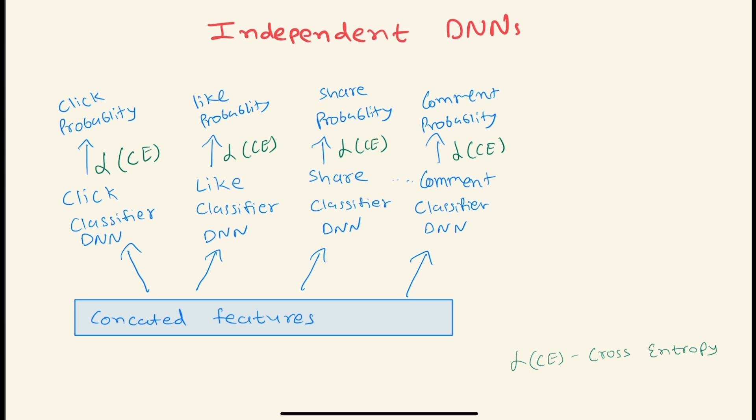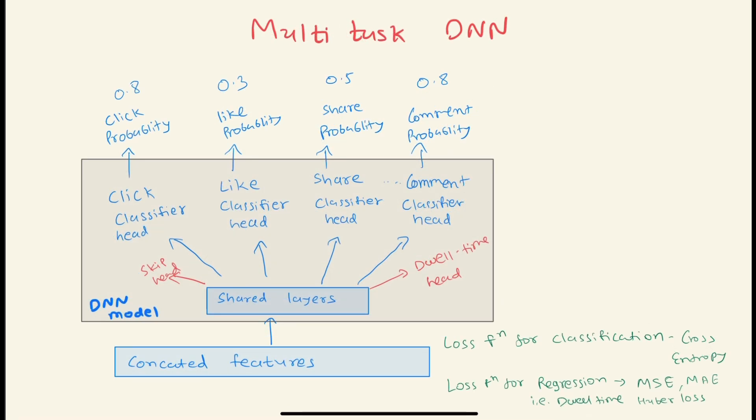The second model architecture option we have is: we again have the concatenated features, and then we have shared layers, and then eventually for each task we may have a single head. For example, for click classifier we may have a separate head, for like we may have a separate head, and so on.